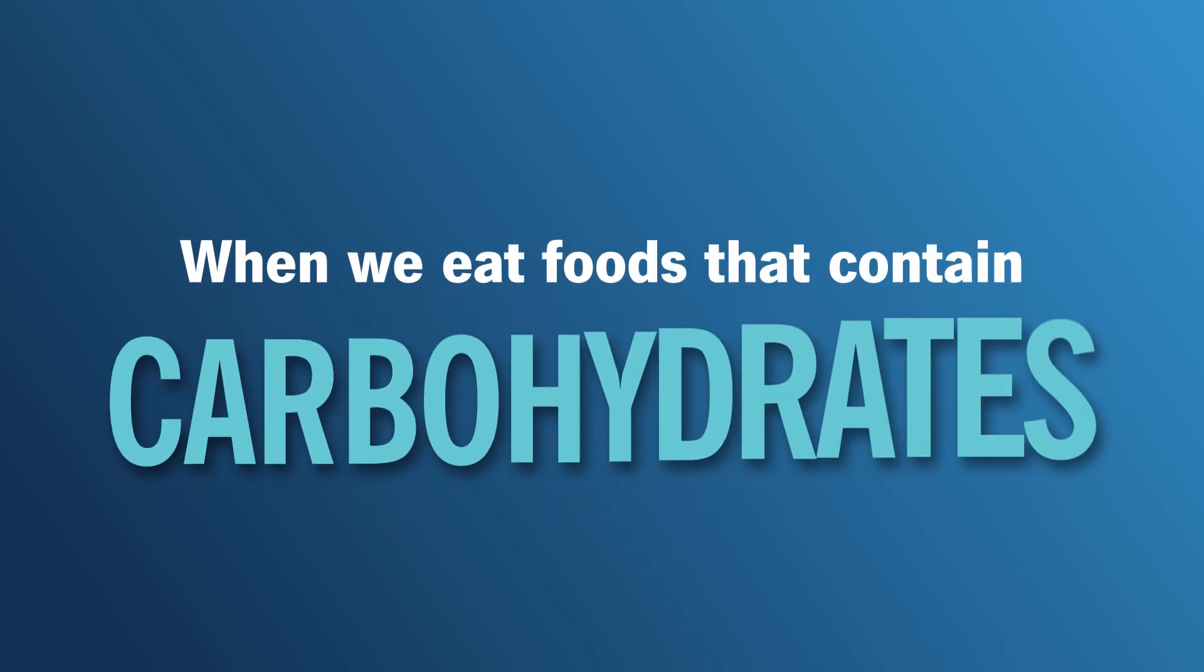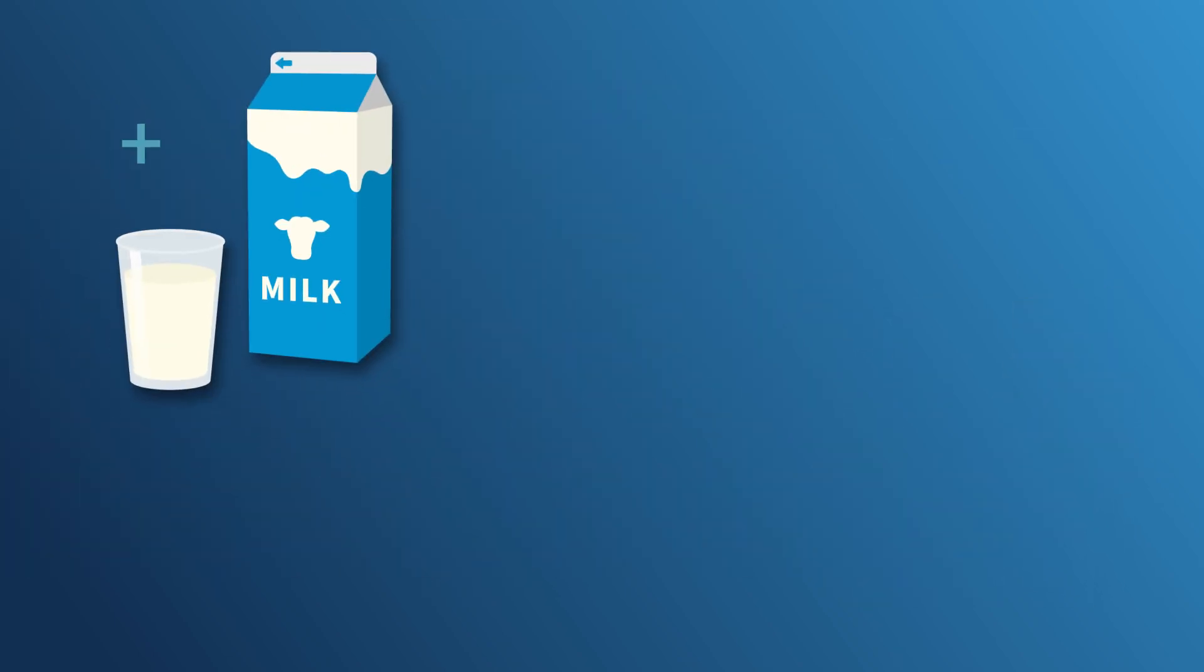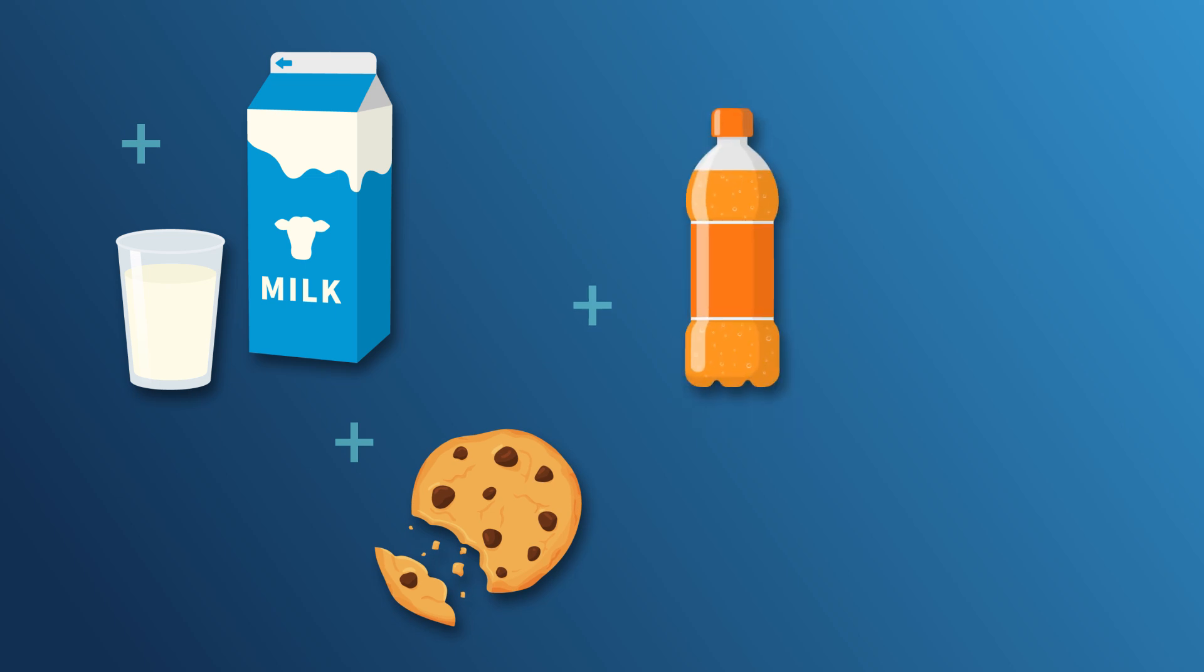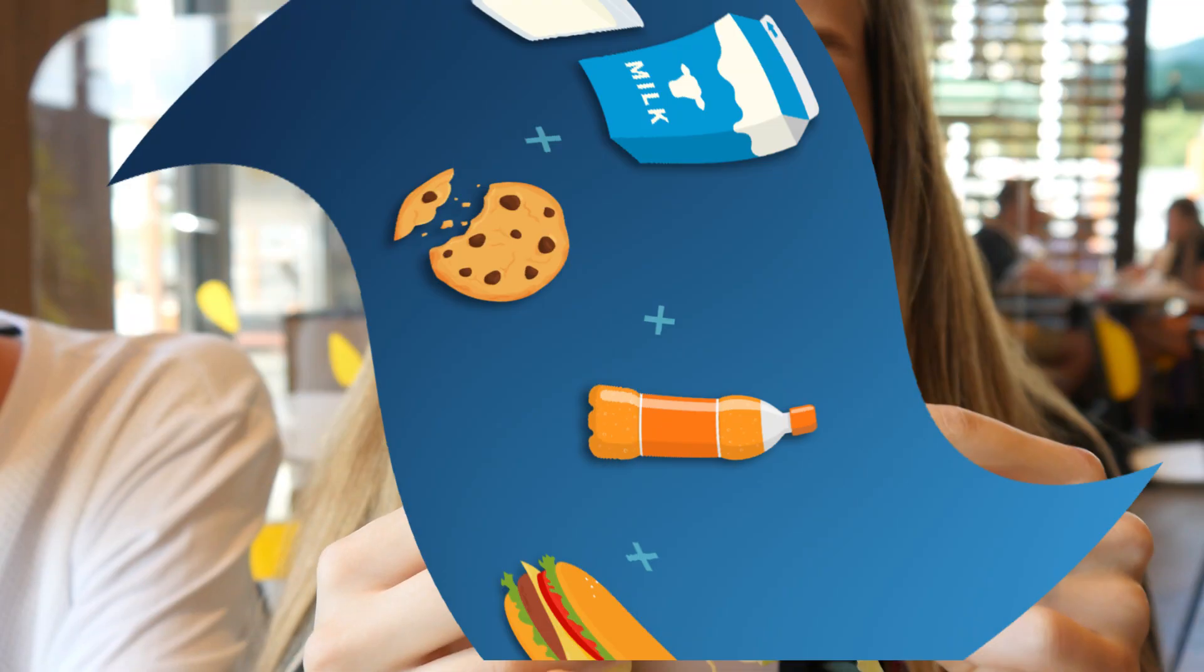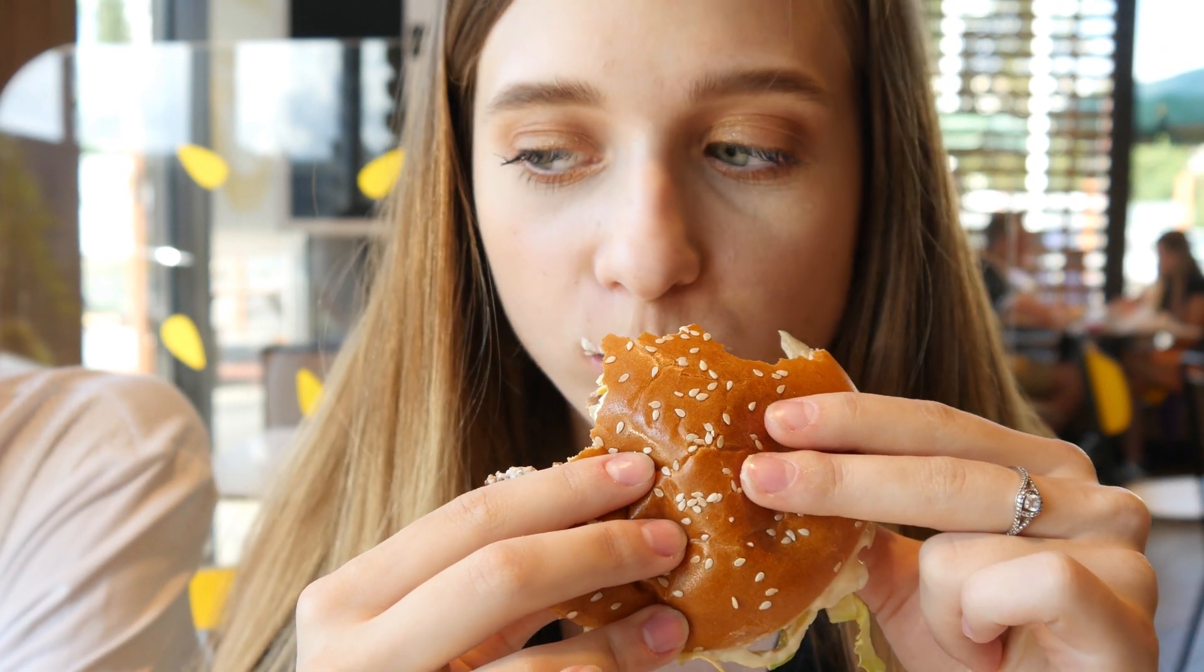When we eat foods that contain carbohydrates, including grains, legumes, starchy vegetables, fruits, dairy products, sugary foods and drinks, and processed foods, our bodies break that sugar down into smaller molecules called glucose.